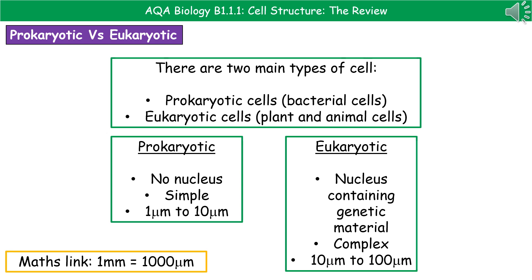Welcome to our review on cell structures. The first thing we need to know about are the two types of cells we can have here on Earth. The first are prokaryotic cells, which are the bacterial cells. The second are eukaryotic cells, which are plant and animal cells. We need to be able to carry out a basic comparison between them, and I've given you a few key facts about prokaryotic and eukaryotic cells in those two boxes.